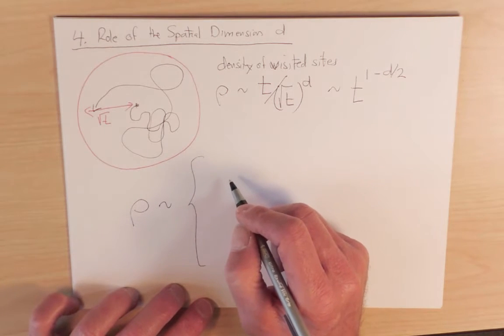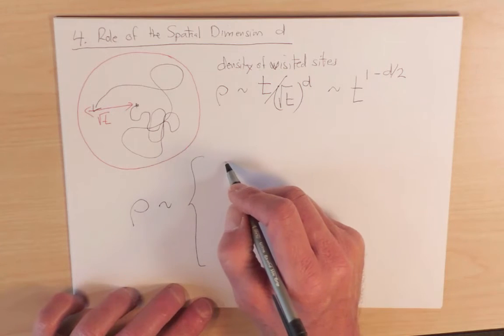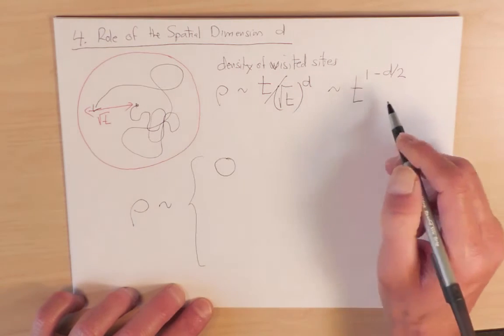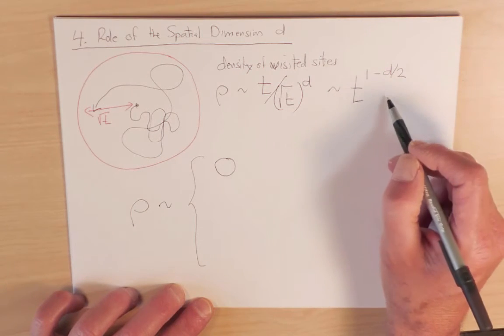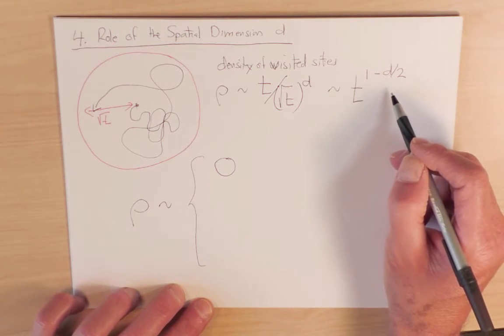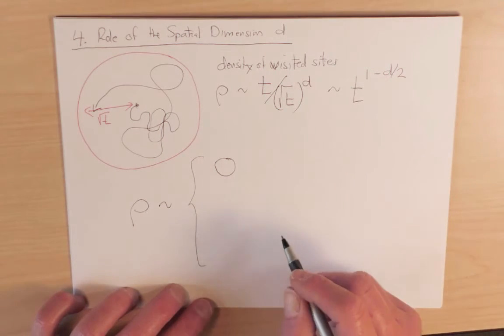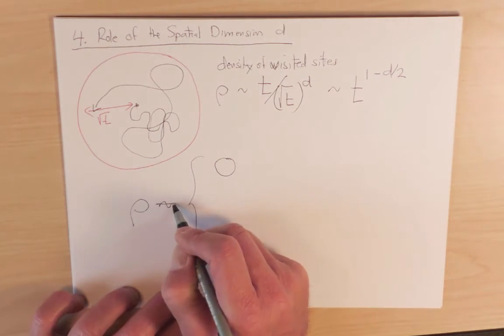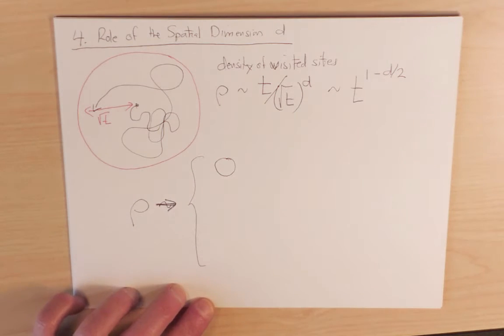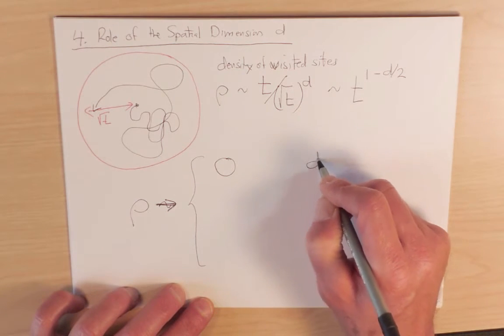For dimension greater than 2, this density will go to 0. Because for dimension greater than 2, this is a negative exponent. So in the infinite time limit, this density goes to 0. So I should maybe write arrow here for approaching and limit of t going to infinity. So this happens for d greater than 2.